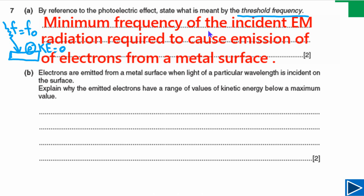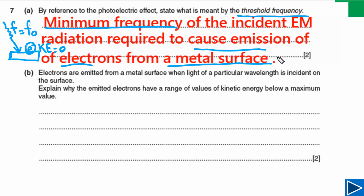This is how you can write your answer. You must mention the minimum frequency of incident electromagnetic radiation to cause emission of electrons from a metal surface. Importantly, threshold frequency depends on the metal surface — if we change the metal, the threshold frequency will change, meaning we need a different frequency for emission of photoelectrons with zero kinetic energy from the metal surface.